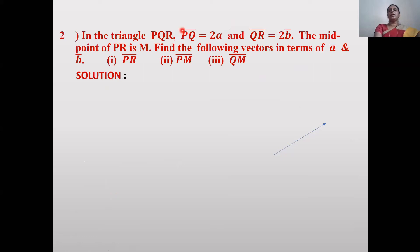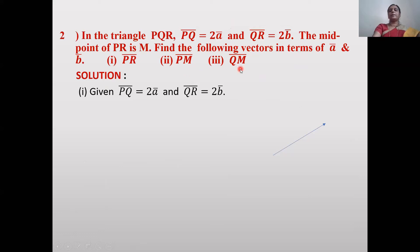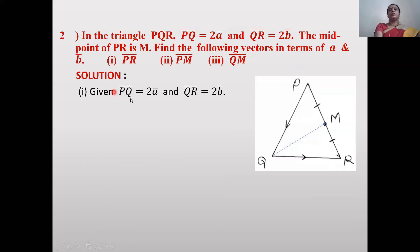Next problem: In triangle PQR, PQ = 2ā, QR = 2b̄, and M is the midpoint of PR. Find the following vectors in terms of ā and b̄: PR̄, PM̄, and QM̄. Given: PQ̄ = 2ā and QR̄ = 2b̄. Draw the diagram of triangle PQR.